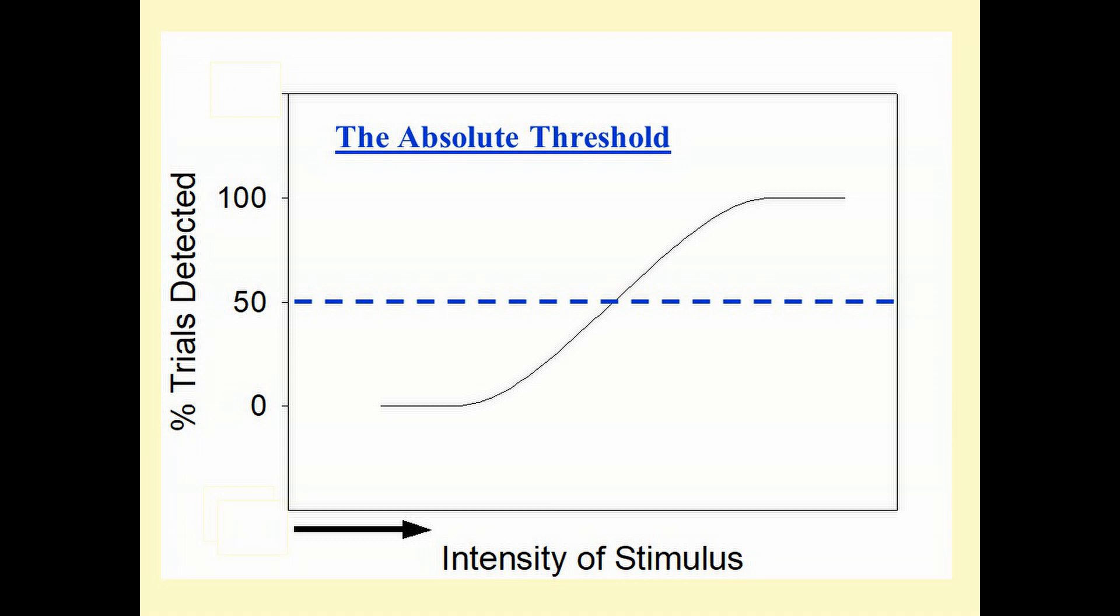When the intensity of the stimulus is zero, it is detected zero percent of the time. As you gradually increase the intensity of the stimulus, you might see that it is detected 20 percent of the time.